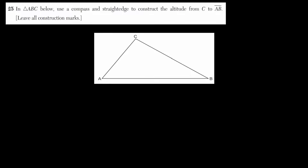Welcome. Let's discuss the open-ended questions for the Geometry Regents for June 2023. In question 25, we are given triangle ABC, which we have in the figure below. Using our compass and a straightedge, let's construct the altitude from C to the line AB. Let's get our compass and a straightedge and perform this construction.